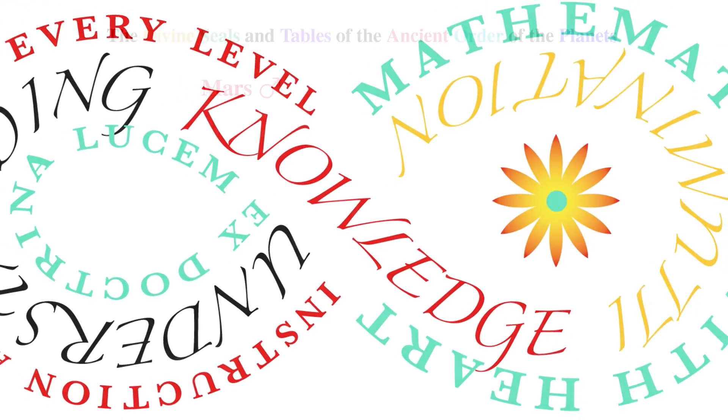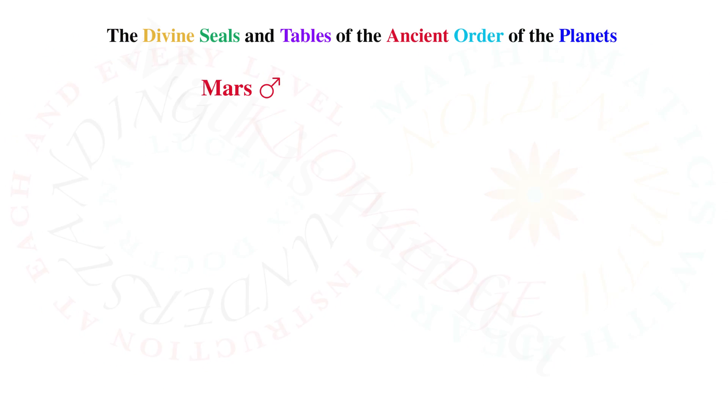Welcome back to my analysis of the Magic Squares of the Seven Planets of Antiquity. I'm Aloisa, and today we are going to look at the third planet in line, namely Mars, which corresponds to Tuesday.